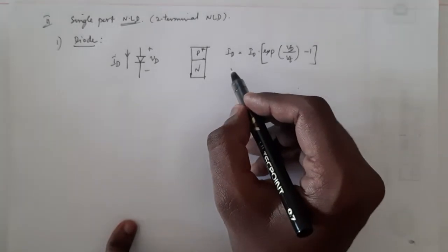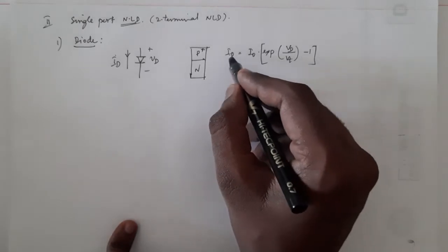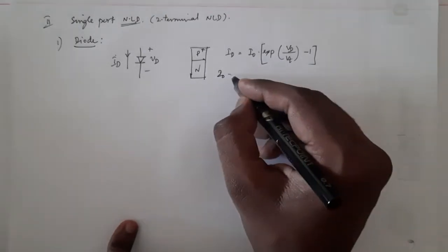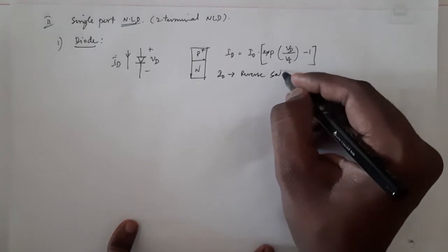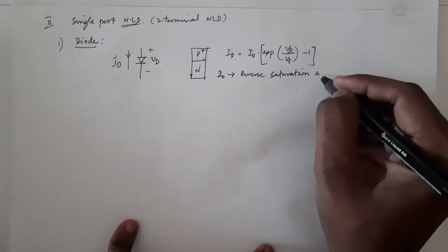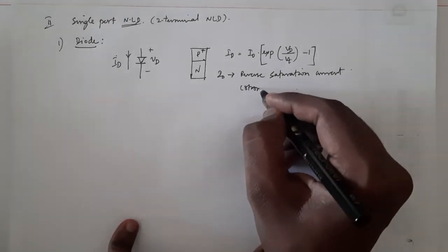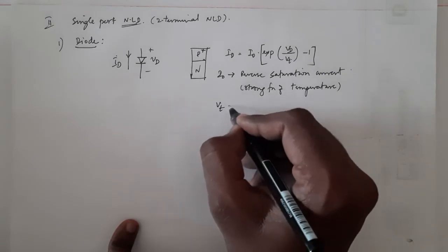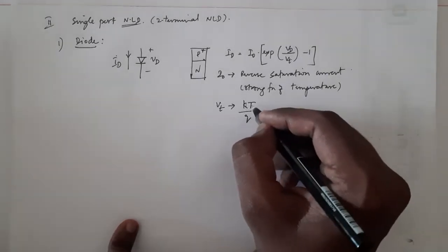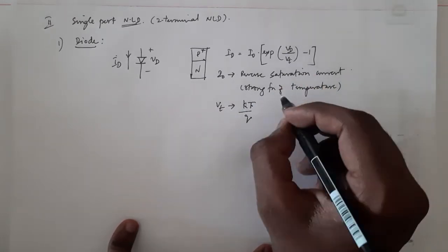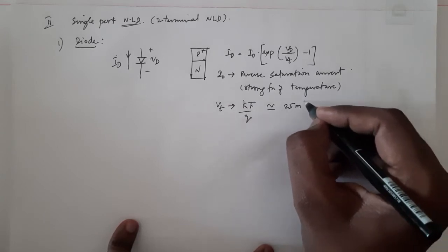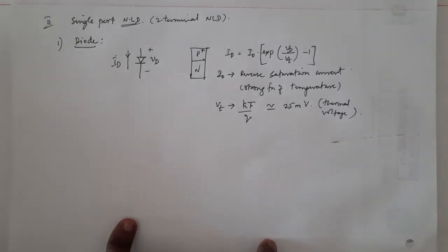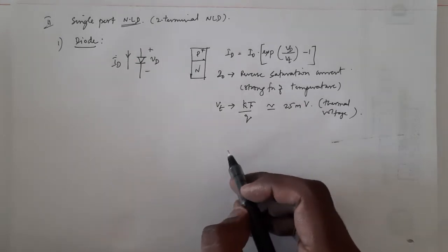Let us define all the parameters. ID is the diode current, VD is the diode voltage. I₀ is the reverse saturation current, which is a strong function of temperature. VT is the thermal voltage, equal to kT/q, where k is Boltzmann's constant, q is the electron charge, and T is temperature — approximately equal to 25 millivolts.